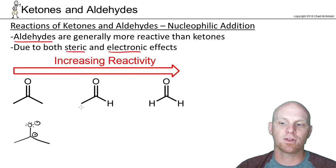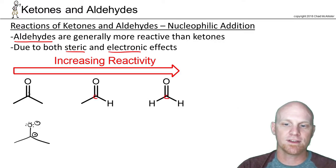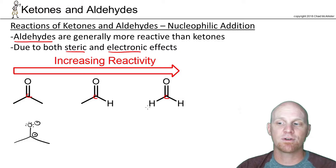Now the steric reasons are easy enough to explain here. So hydrogen's much smaller than any carbon chain. And so if you have a nucleophile trying to attack the carbonyl carbon of any one of these, he's going to have the easiest time with formaldehyde on the end here, just due to steric reasons.